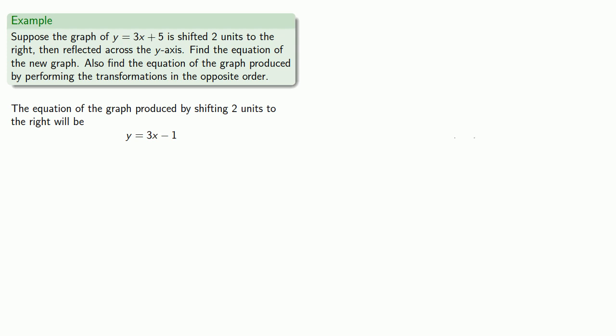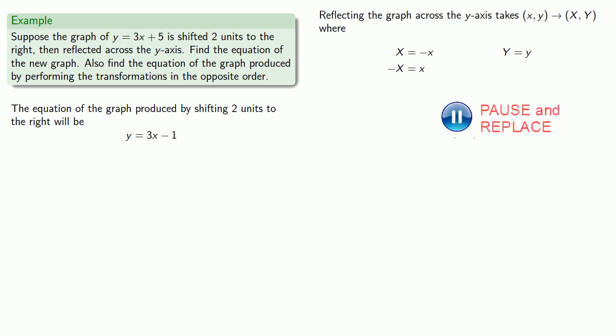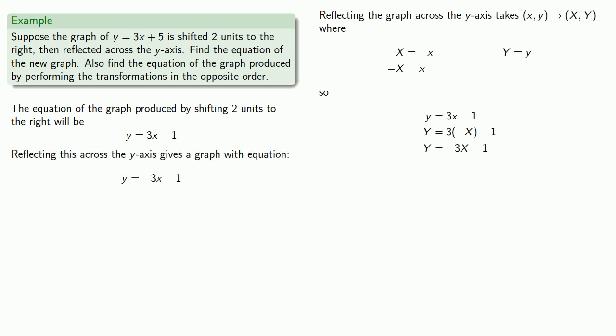Well, that's one transformation. We still need to reflect the graph across the y-axis. So, reflecting the graph across the y-axis takes our original coordinates (x, y) and sends them to a new set of points (capital X, y), where, solving for our original lowercase x and y, and we'll replace and simplify to get our new equation. And so, when we do that second transformation, reflecting this across the y-axis gives a graph with the equation y equals negative 3x minus 1.